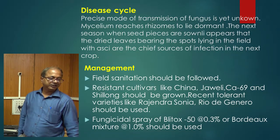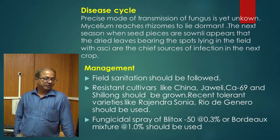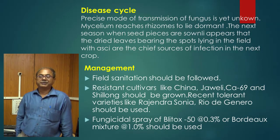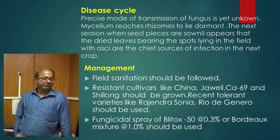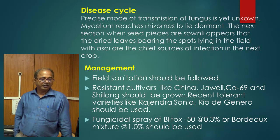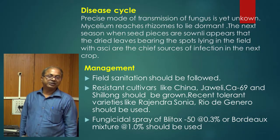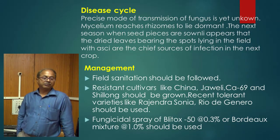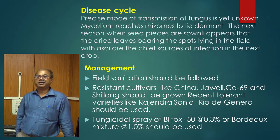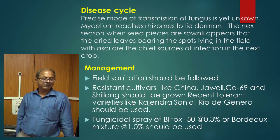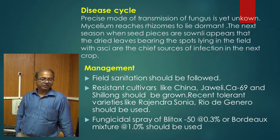Regarding the disease cycle of turmeric leaf spot, the precise mode of transmission of the fungus is not yet fully known. The mycelium reaches the rhizome to lie dormant, and next season when seed pieces are sown, dried leaves bearing spots lying in the field serve as the chief source of inoculum for the next crop. You can manage the disease by field sanitation and by growing resistant cultivars like Javeli, China, CA-69, and Sila.